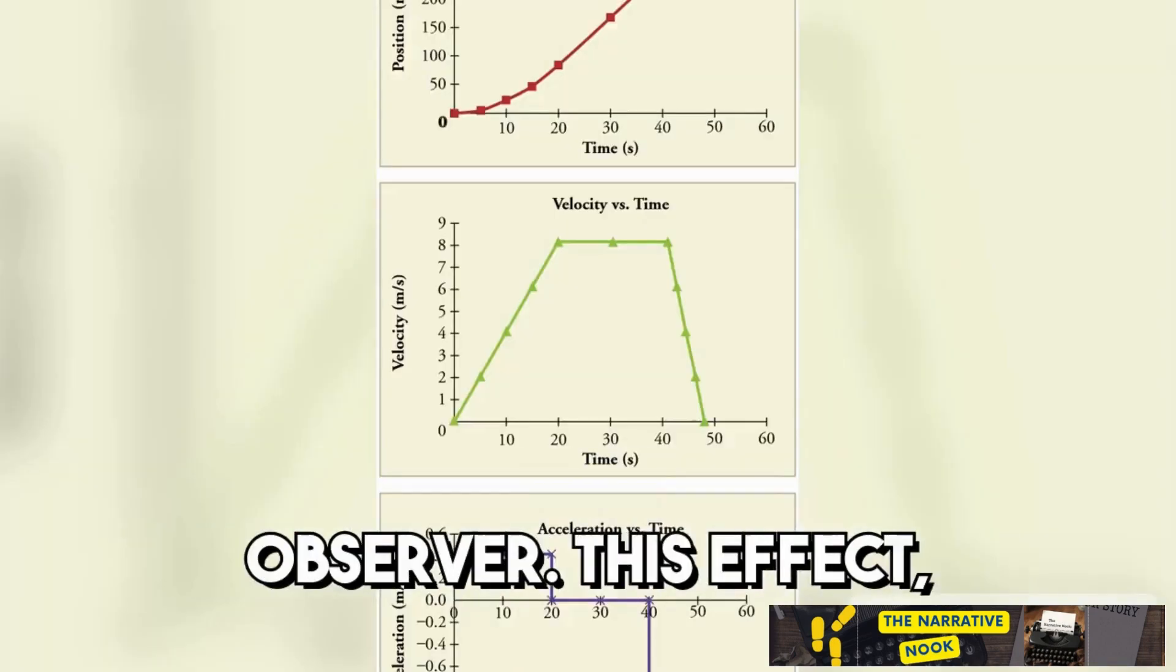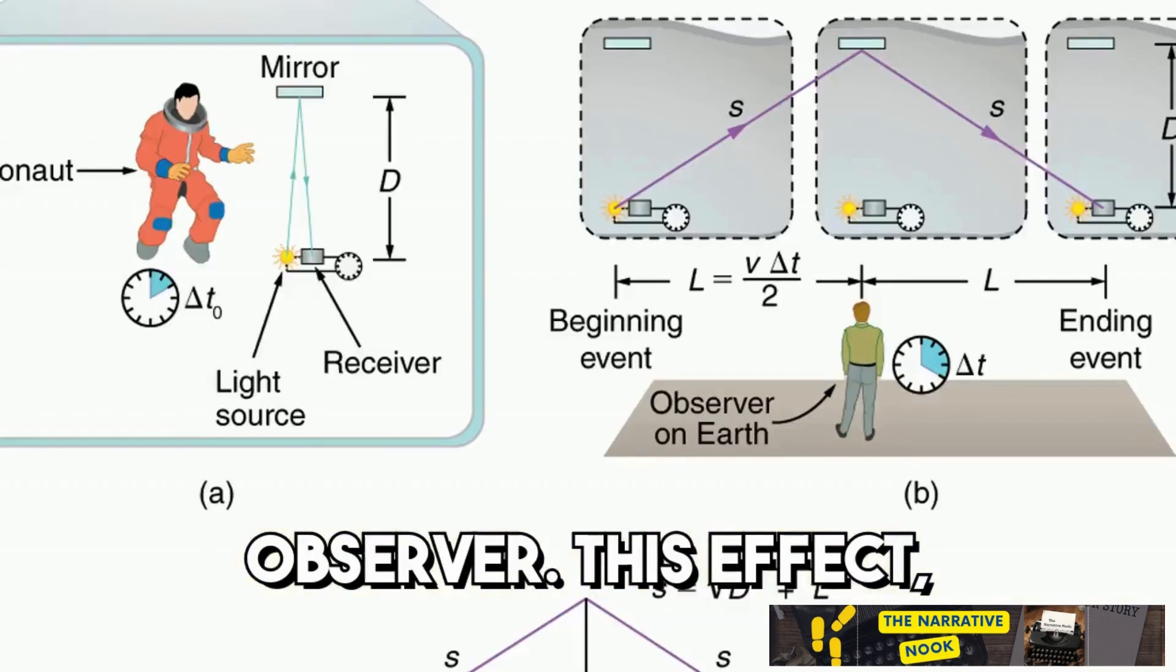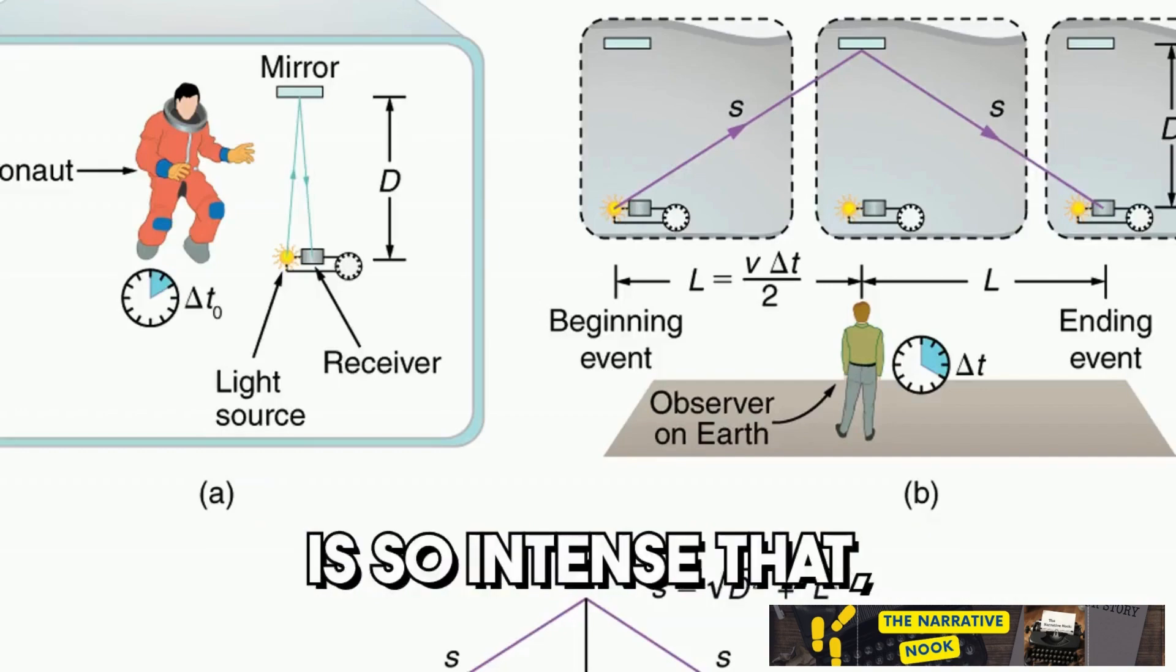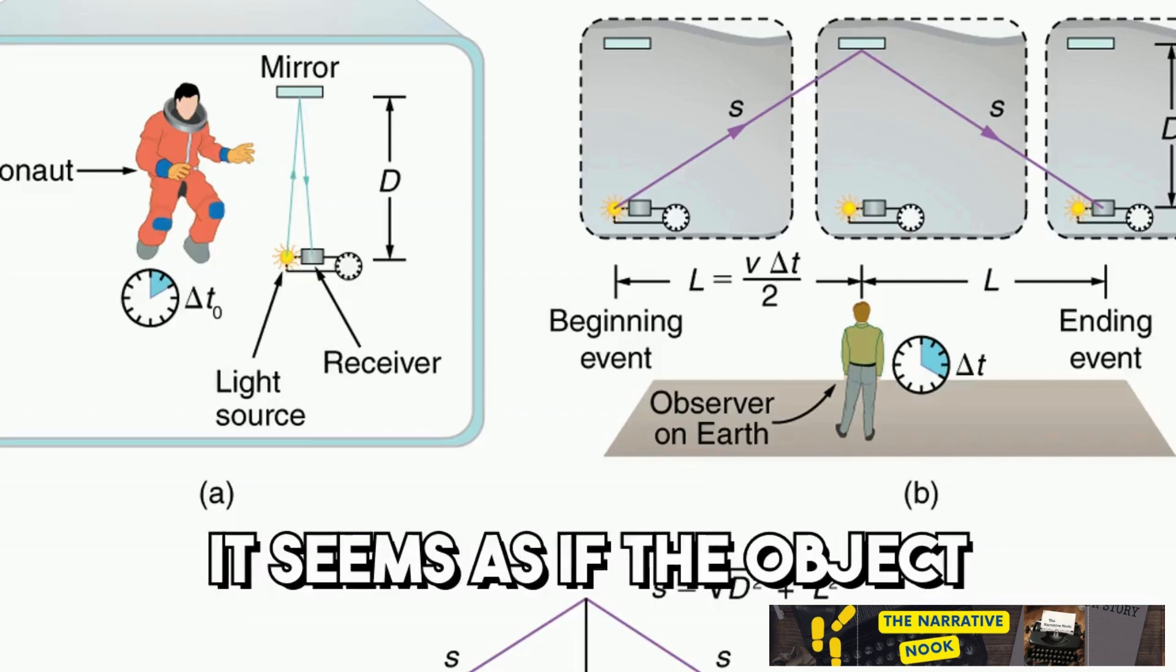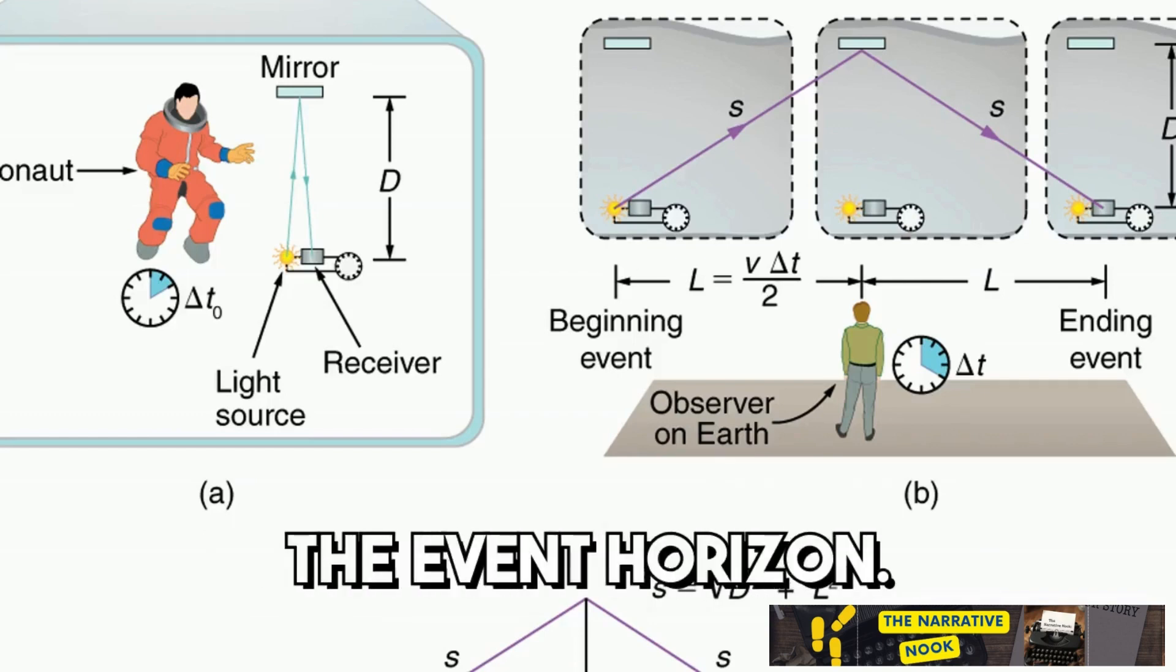Time itself slows down for the observer. This effect, known as time dilation, is so intense that, from an outsider's perspective, it seems as if the object is frozen in time, hovering just above the event horizon.